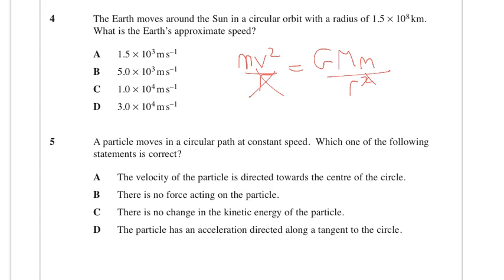So mv squared over r equals GMm over r squared. Let's cancel those, so we know that the velocity is going to be root GM over r. So let's run out those numbers. The mass of the Sun is in the formula sheet, so 2 times 10 to the 30, times 6.67 times 10 to the minus 11, divided by 1.5 times 10 to the 11, and square root that answer, we end up with 3 times 10 to the 4, which is option D.